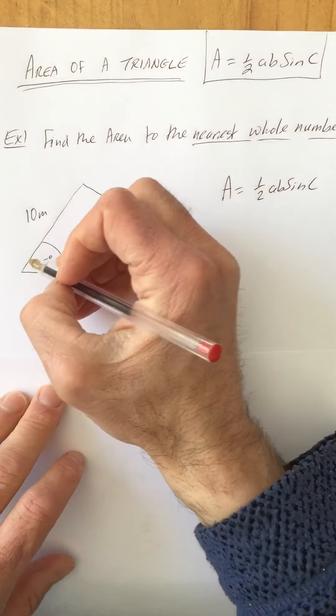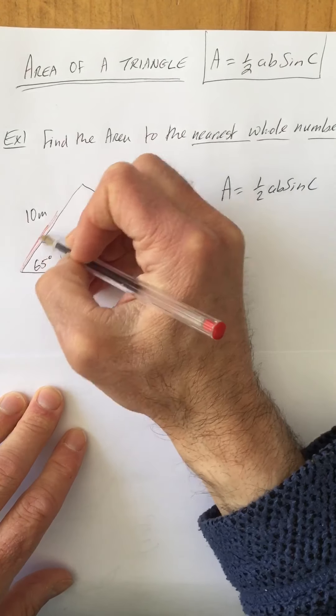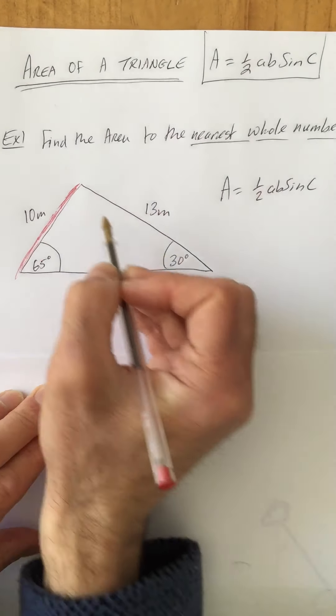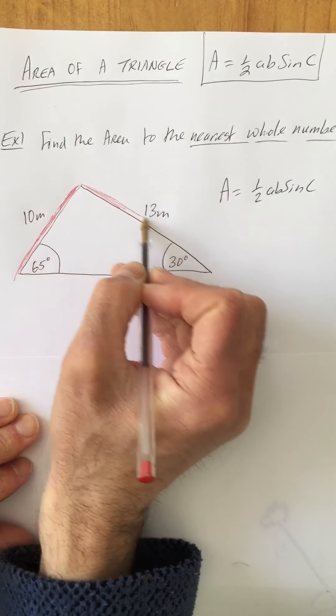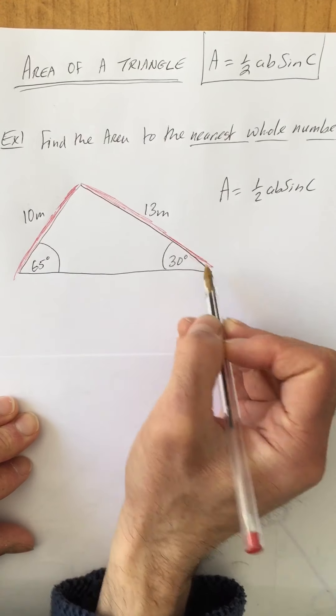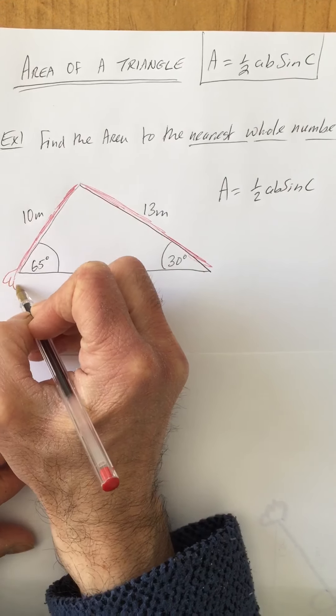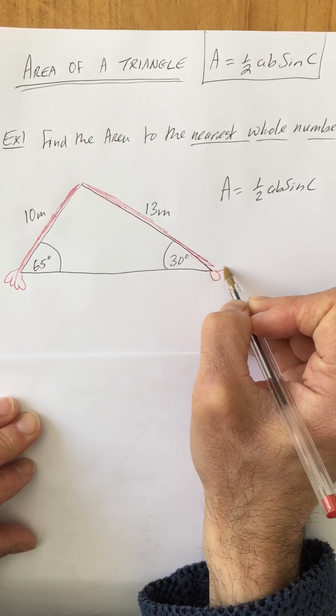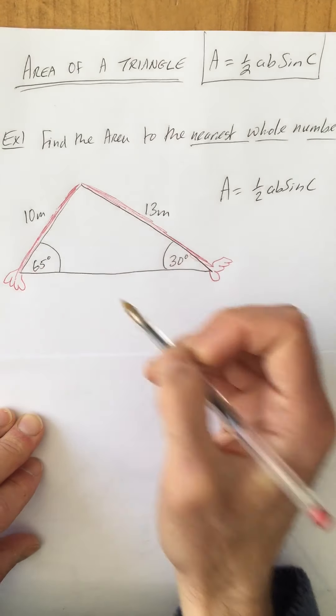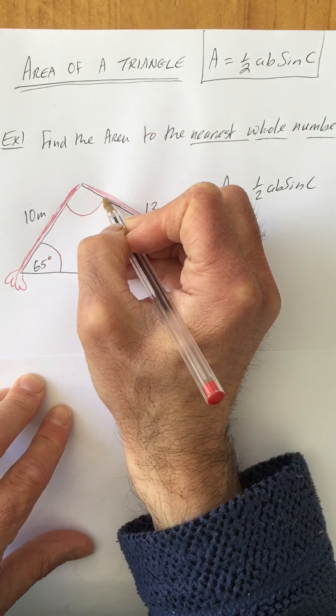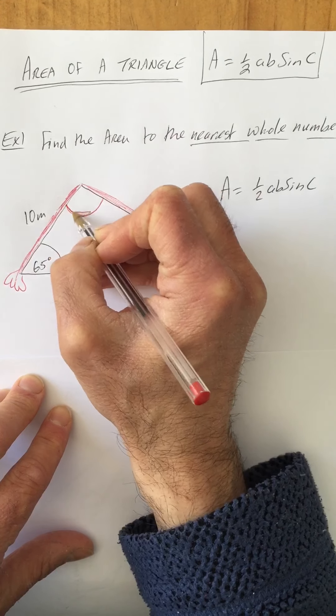...that we know the length of 10 meters, so I can shade that in—there's one arm. I know 13 meters, so there's another arm. You could almost imagine a hand at the end and a hand at the end—there's your two arms. And that means the hug angle that we would need is this angle here.